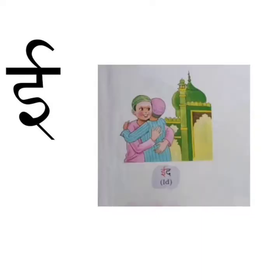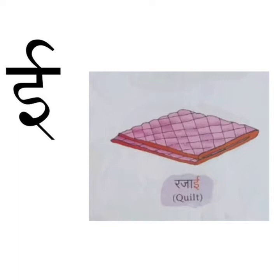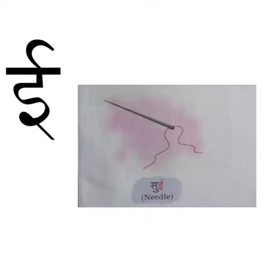E say eid. Eid is a festival. We have learnt about Eid festival previously. E say razai — razai means quilt. A quilt is needed in winter season when it is very cold. E say sui — sui means needle. A needle is a sharp object. It is used to stitch clothes.